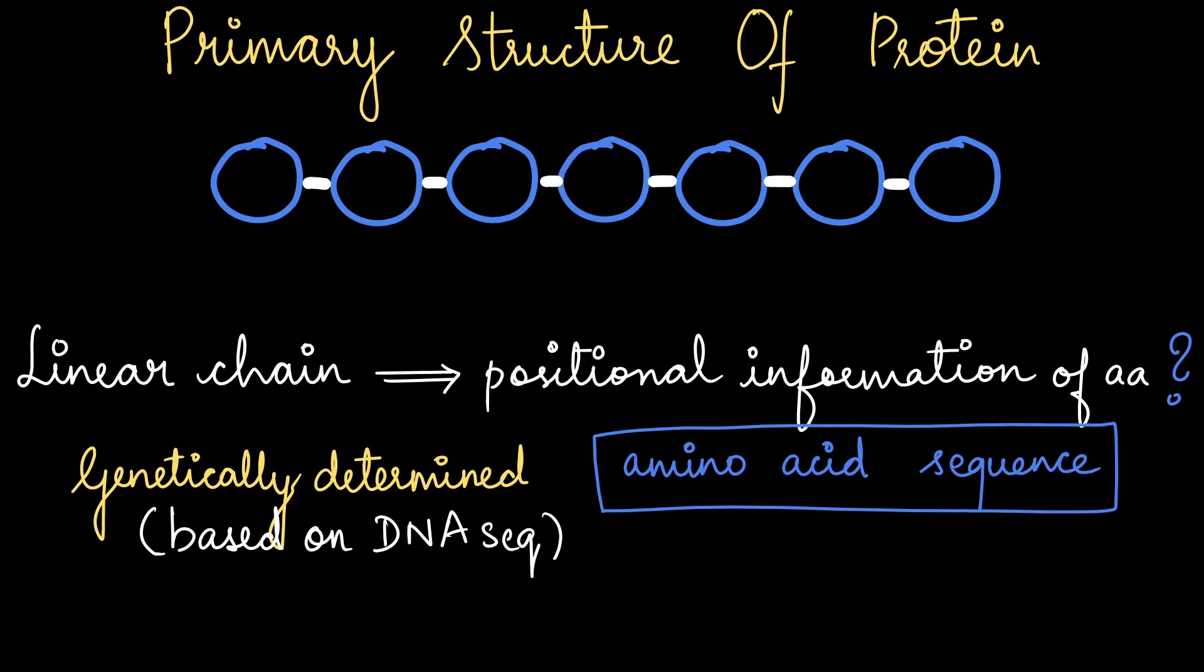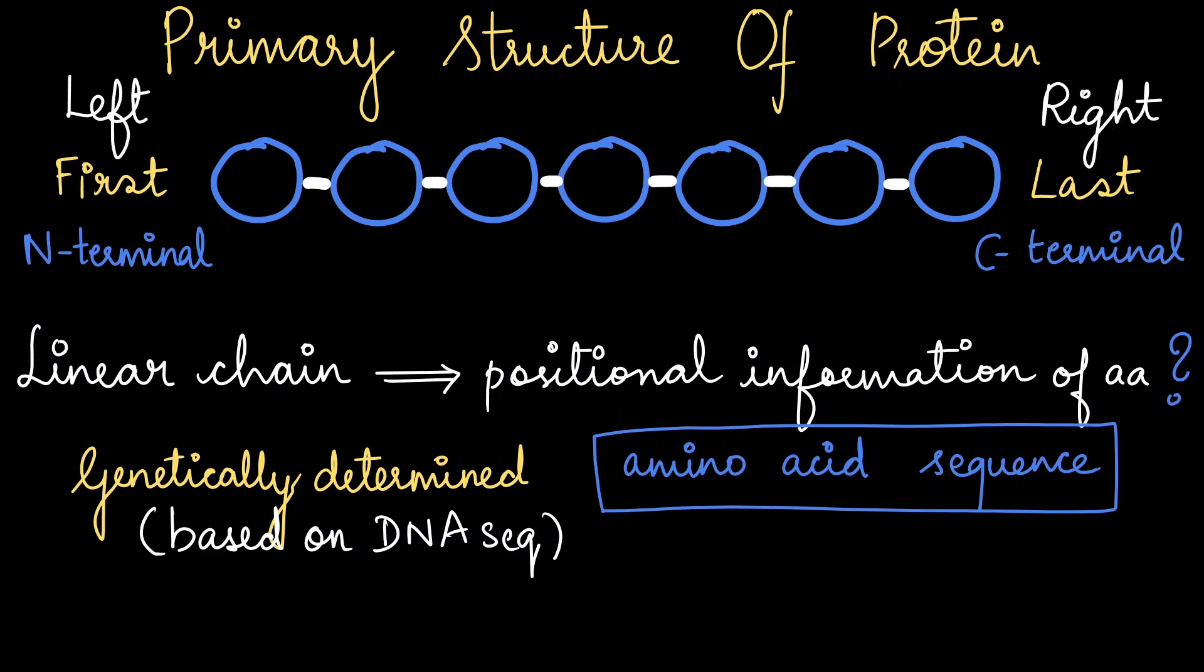The linear chain is different on both ends, and therefore we can say that a primary structure has polarity. The first and last ends usually have N-terminal and C-terminal respectively. N-terminal means amine terminal, C-terminal means carboxy terminal. The first amino acid's direction is considered as left, the last one's is considered as right. In between the amino acids we can find peptide bonds.